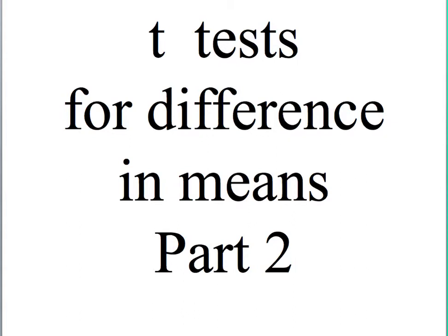Hi, this is the second part of the intro to t-tests for differencing means. In the first part, we talked about why we use t-tests, how we determine the type of test that we need to use — because there are three types of t-tests — the null and alternative hypothesis, how to determine the degrees of freedom, and how to obtain your critical t-value.